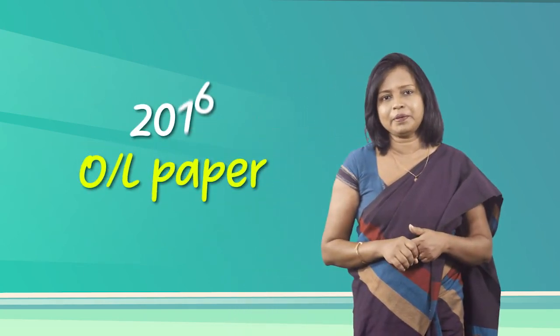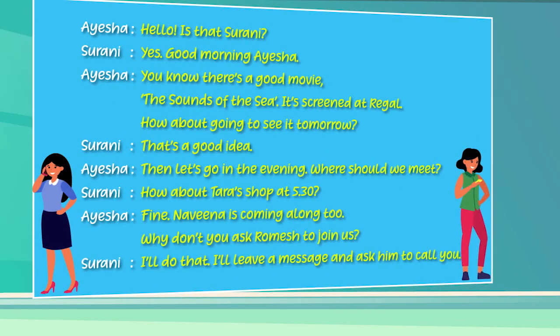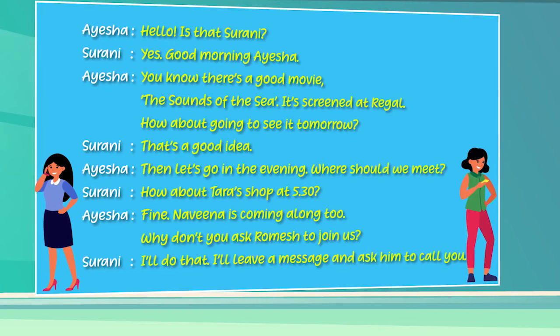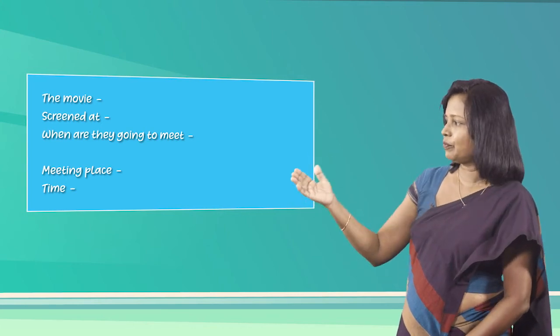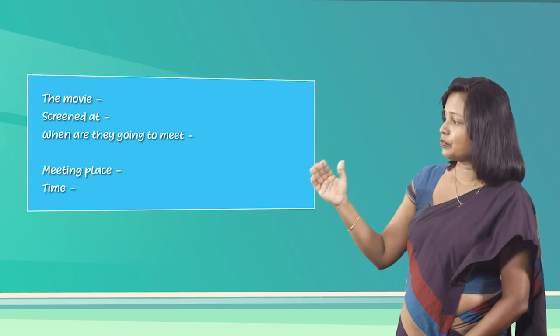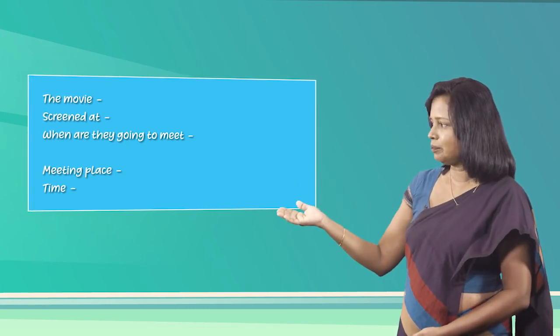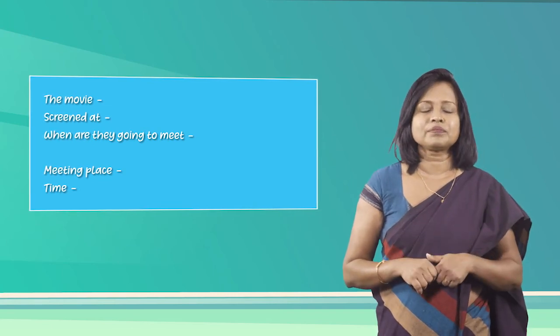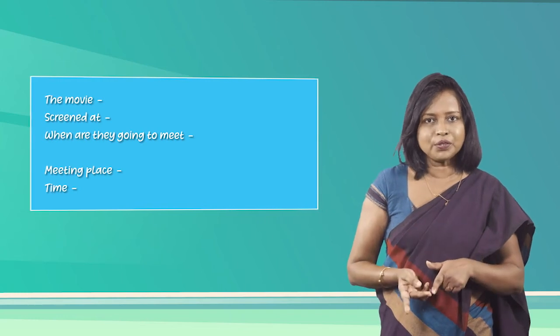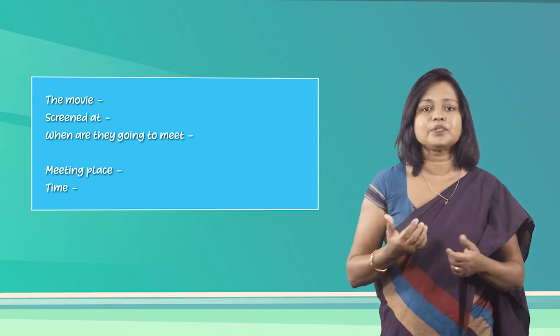Let's read the telephone conversation and transfer information into an information sheet. This activity is an adaptation of a question that appeared in the 2016 O-Level paper. It's a conversation between Ayesha and Surani. First you have to find what the movie is and where it is screened. Then when they are going to see it, the meeting place, and the time. So pause the video, go back, read it and fill in the information. You can start now.